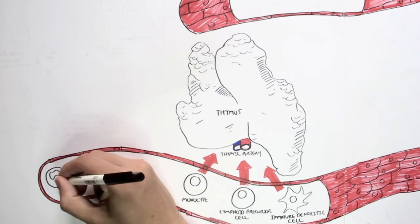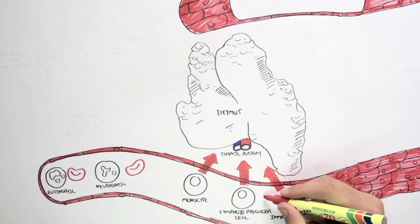And remember, the granulocytes are still circulating the bloodstream, such as the neutrophil and eosinophil.